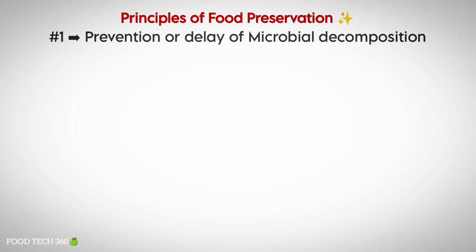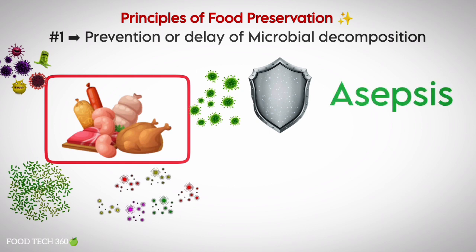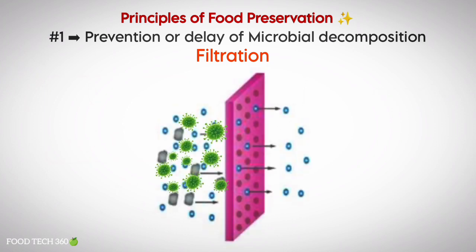Now let's see the principles of food preservation. The first principle is prevention or delay of microbial decomposition. This can be done by keeping out microorganisms and preventing contamination from pathogens. It involves applying the strictest rules to minimize risk of infection — this is called asepsis. Next is filtration, which is a process of removal of microorganisms through usage of a membrane that retains microorganisms.